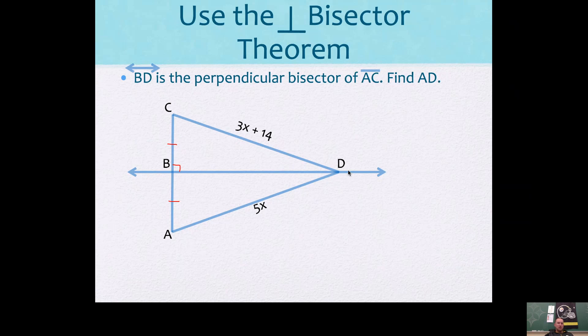Well, if this is the perpendicular bisector, then what do you know about the distance from C to D compared with the distance from A to D? They're the same. 5x and 3x plus 14 are equal. So subtract 3x from both sides. 2x will be 14. So 1x is 7.